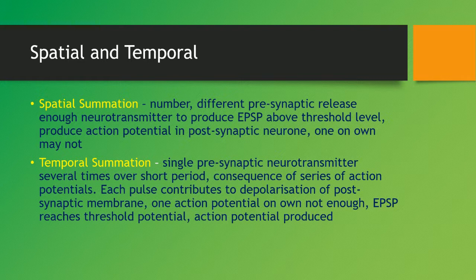Spatial summation involves many synapses converging onto the next neuron. In temporal summation, a single pre-synaptic neuron fires several times over a short period. The consequence is a series of action potentials, with each pulse contributing to the depolarization of the post-synaptic membrane. As one action potential on its own is not enough, the cumulative EPSPs reach the threshold level and an action potential is produced — essentially, one pre-synaptic neuron generates many repeated action potentials due to accumulating depolarization.